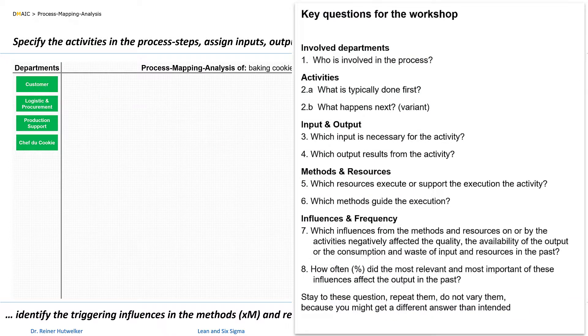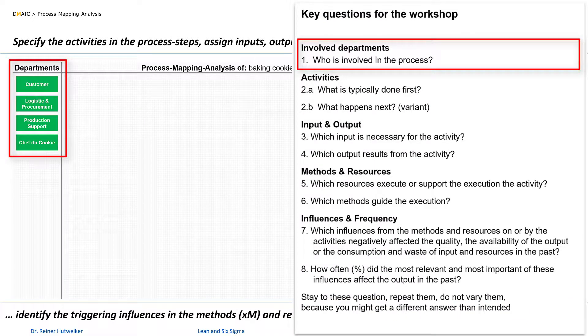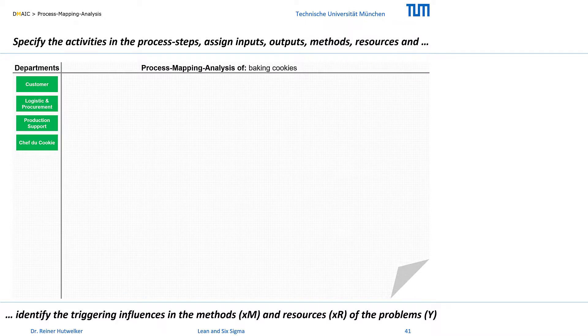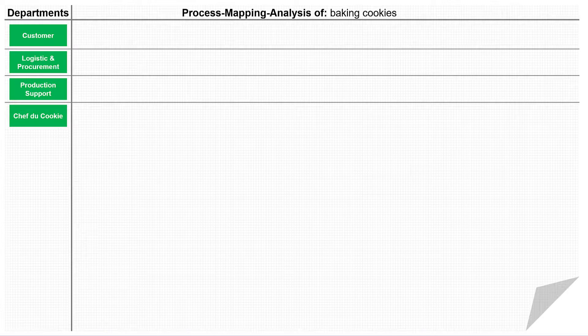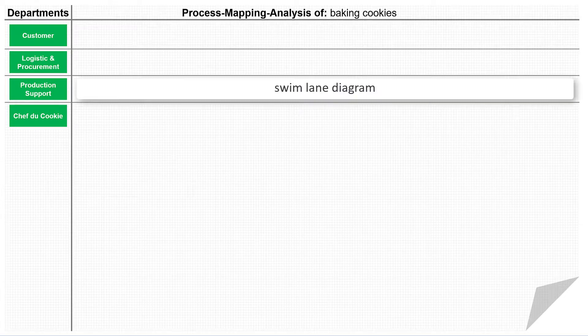Now we know the answer to the first key question: who is involved in the process? Next we will find out what is done. To prepare the place for the activities, I draw horizontal boundary lines in the flipchart for each department. This type of process mapping is called a swim lane diagram, in contrast to the flowchart which is often used for official process documentation.